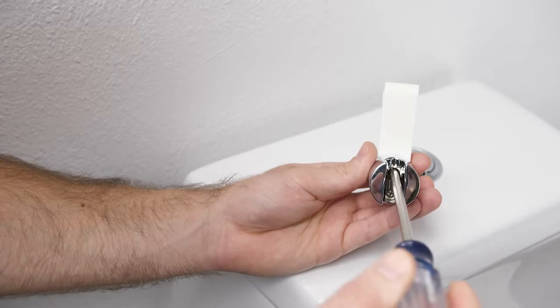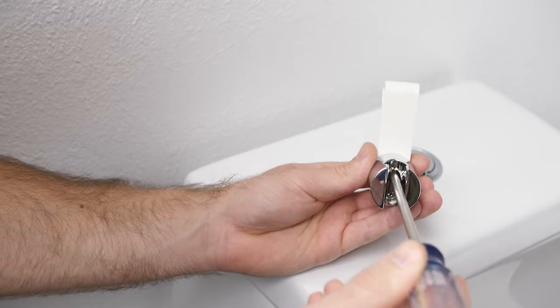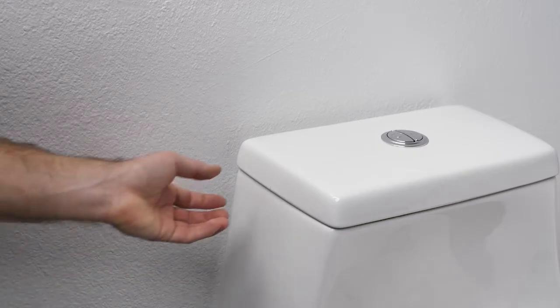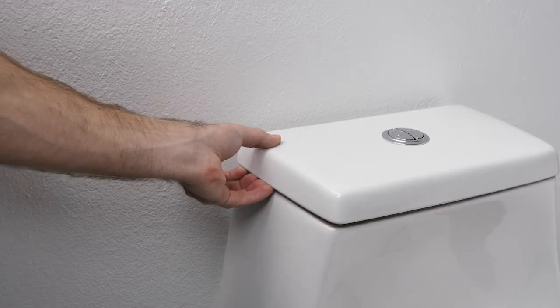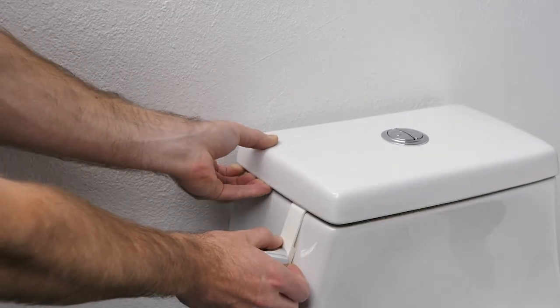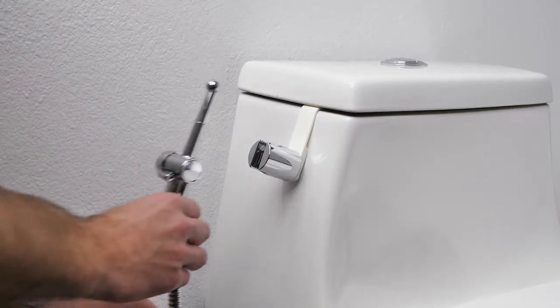To mount the bidet sprayer to the side of the toilet, attach the bidet holster to the toilet hook using the provided screws. Lift the lid of the toilet tank to hang the toilet hook. Insert the bidet sprayer into the holster.